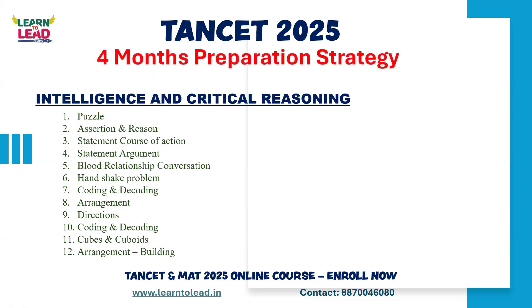The next part is Intelligence and Critical Reasoning. In the Intelligence and Critical Reasoning section, you cover puzzle-type questions. First, cover blood relations, coding and decoding, directions, and cubes and cuboids. Start with topics you are strong in.